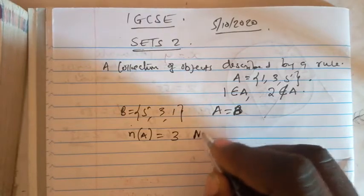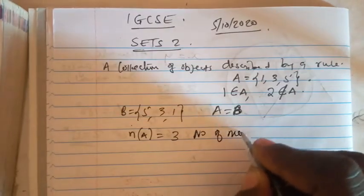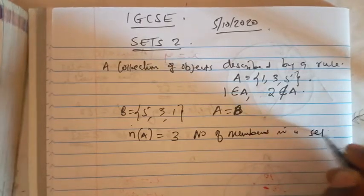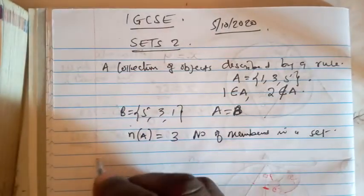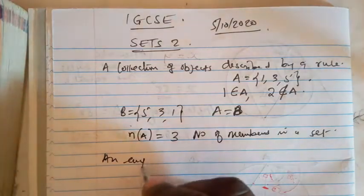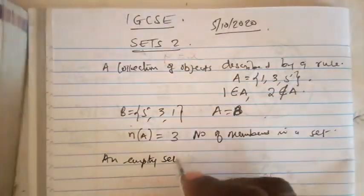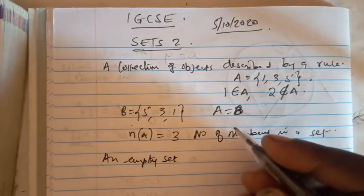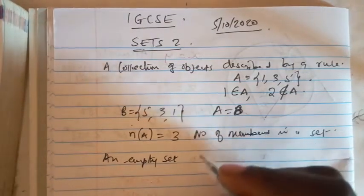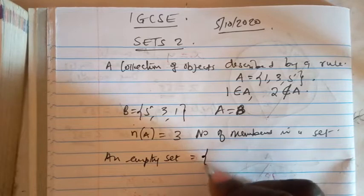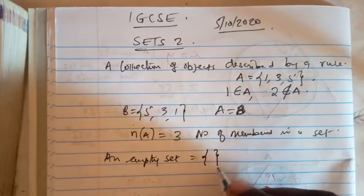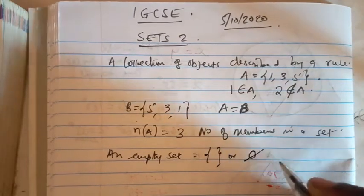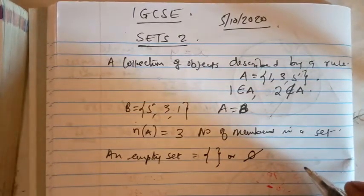An empty set, or a set with no members, is shown either as an empty pair of brackets or with the empty set symbol. That is how we denote an empty set.